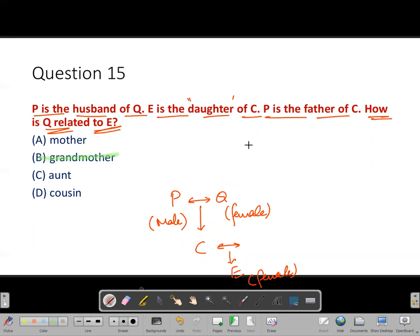If the question was asked the other way around—how is E related to Q?—then we can say that E is the granddaughter of Q. I hope this is clear to you. Thank you.